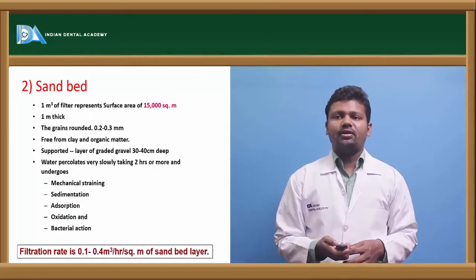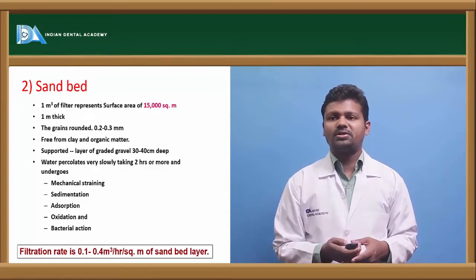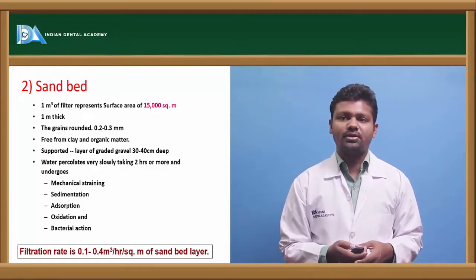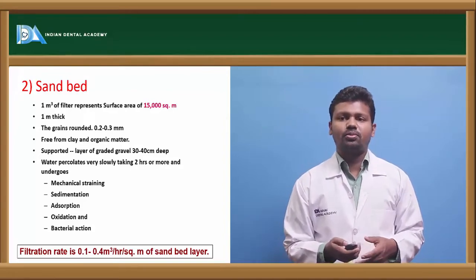Then there is sand bed - it is 1 meter cube of filter representation. Filter represents surface area of 15,000 square meters, 1 mm thick, and the grain is 0.2 to 0.3 mm.